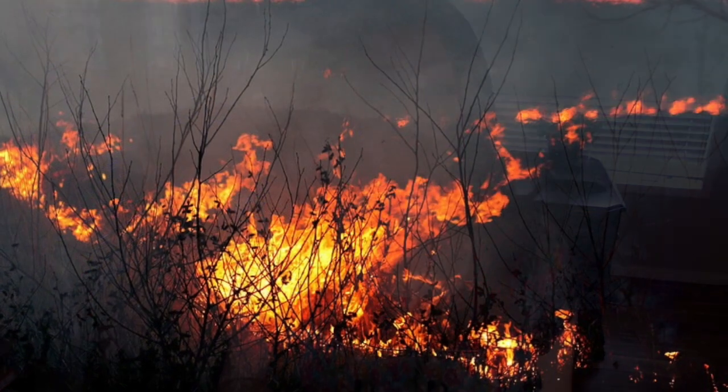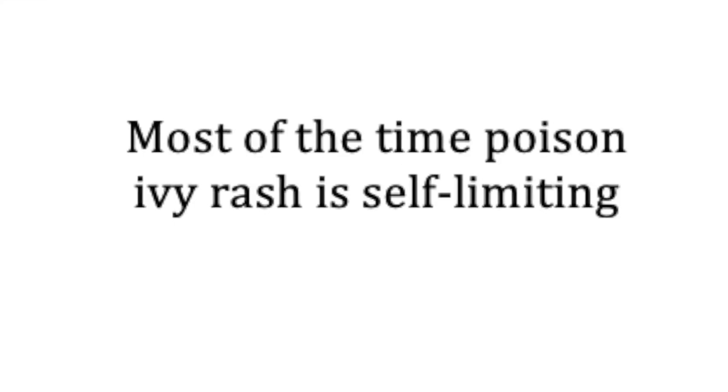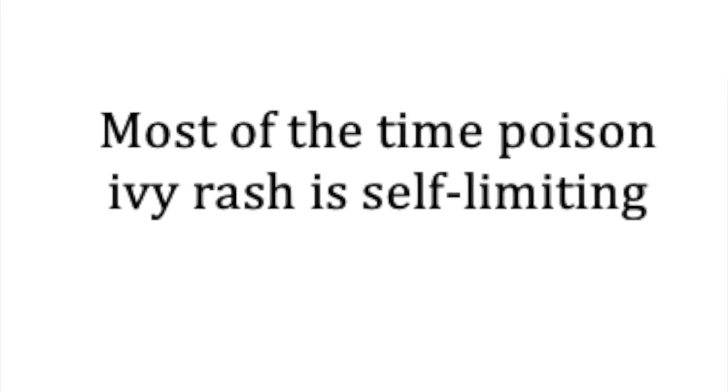Another way to get poison ivy is actually by inhaling it. If you have a fire pit and somehow poison ivy was placed in it or was on the ground nearby and you burn it, the smoke can be inhaled and you can basically get poison ivy in your lungs. Things like getting it in your eyes, on your face, all over your body, or inhaling it — those are things that can become very bad very quickly.